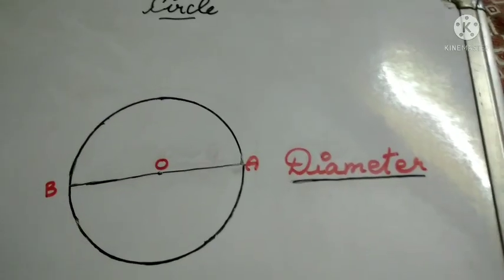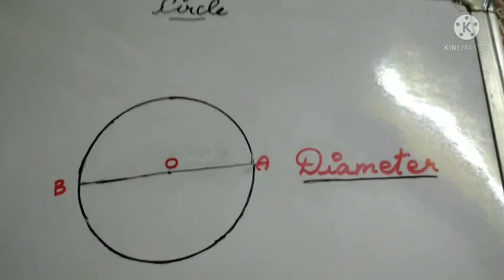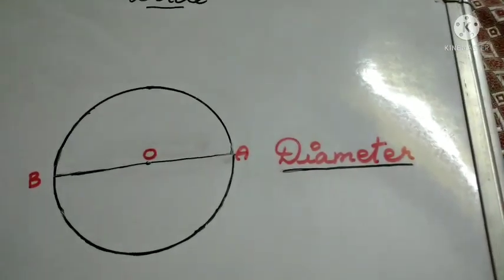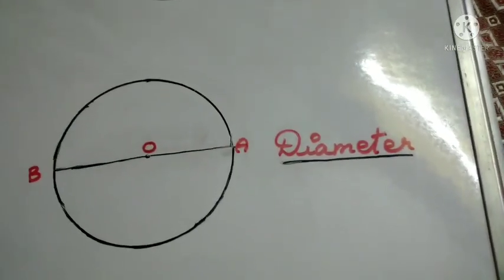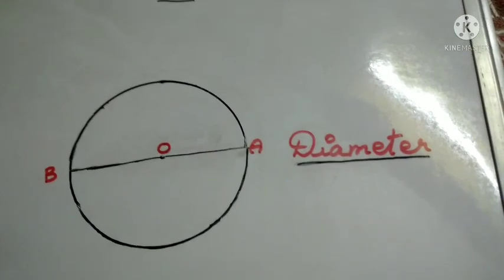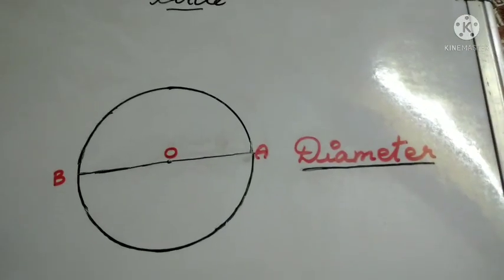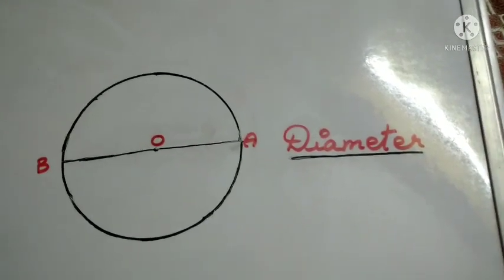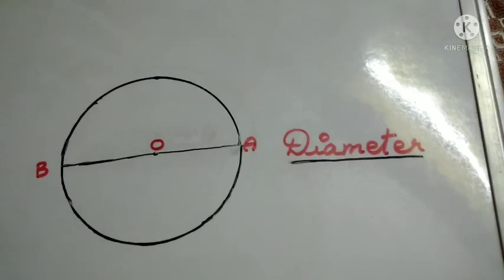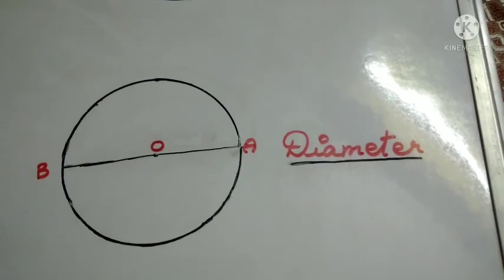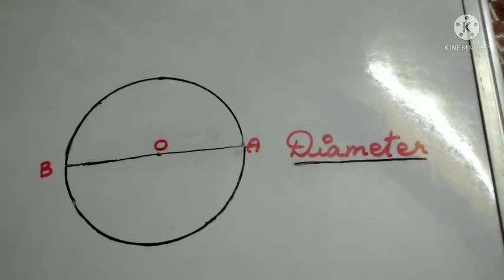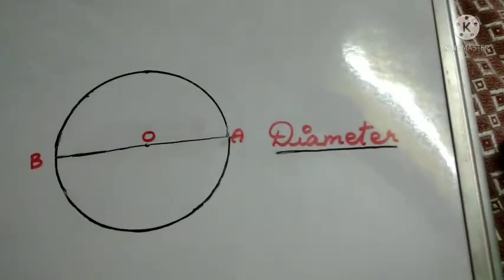Now we are going to learn what is diameter. A line segment joining two points of a circle and passing through its center is known as diameter. Here, AB is the diameter.